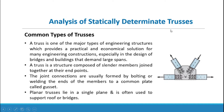A truss is one of the major types of engineering structures which provides a practical and economical solution for many engineering applications, especially in the design of bridges and buildings that demand large spans. A truss is a structure composed of slender members joined together at their end points. Joint connections are usually formed by bolting or welding the ends of members to a common plate called a gusset plate. Planar trusses lie in a single plane and are often used to support roofs or bridges.